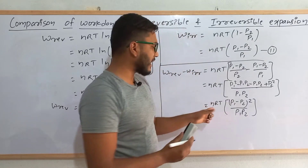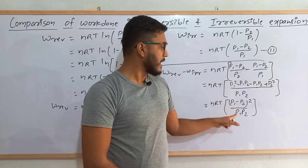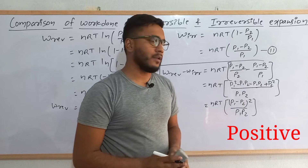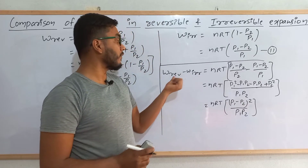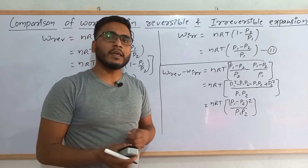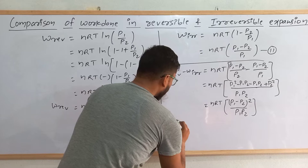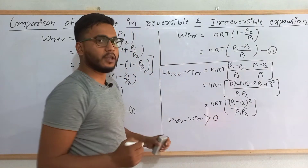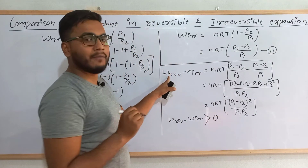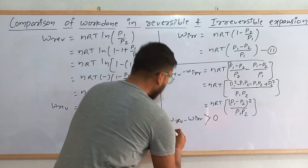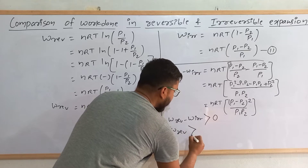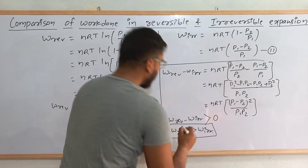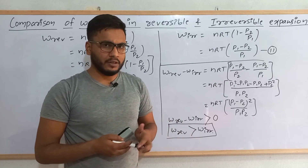Let's examine this value nRT × (p1 − p2)²/(p1·p2). Pressures are positive quantities and there is a square term — meaning this expression will always be positive. That means when we subtract work done in the irreversible process from work done in the reversible process, we always get a positive value. So W_reversible − W_irreversible is always greater than 0. Therefore W_reversible must be greater than W_irreversible.